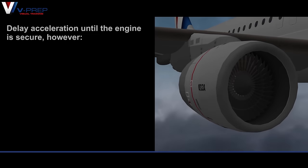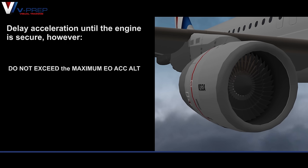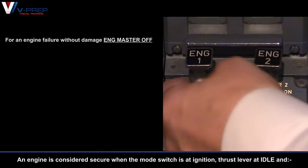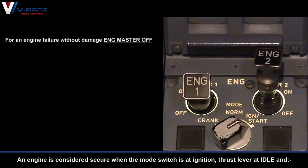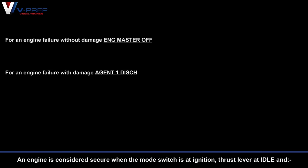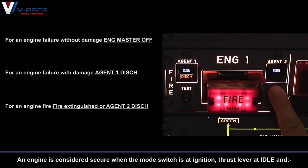Stop ECAM and clean up the aircraft at acceleration altitude. Delay acceleration until the engine is secure, but do not exceed the maximum engine-out acceleration altitude. Maximum takeoff thrust is limited to 10 minutes TOGA. An engine is considered secure when: mode switch at ignition, thrust lever at idle, and — for engine failure without damage: engine master off; for failure with damage: agent 1 discharged; for engine fire: fire extinguished or agent 2 discharged.